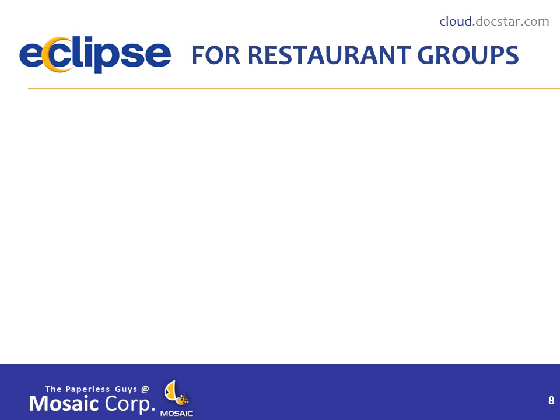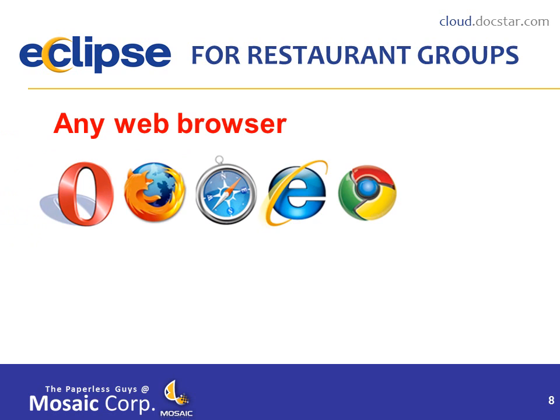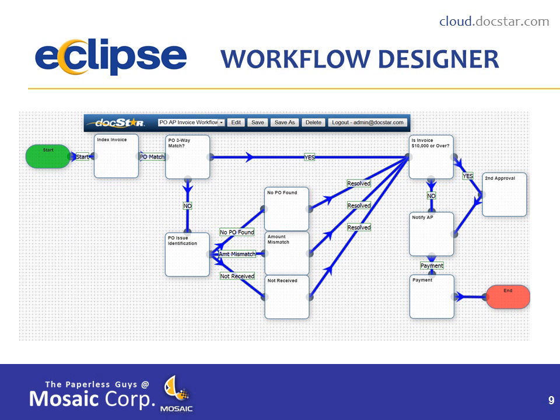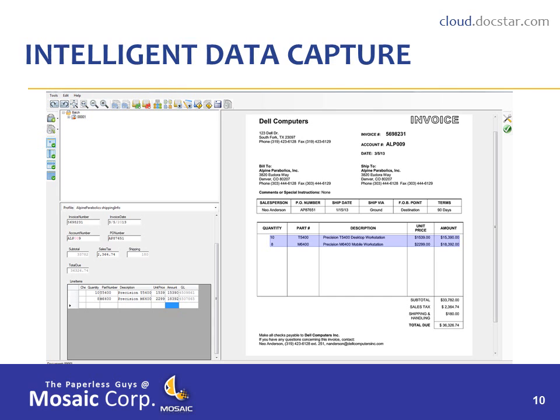The answer to these AP challenges is Eclipse for restaurant groups. It's software that runs on any web browser and on any device. It comes with a workflow designer that's easy to use — just click to add a step — and you can have as simple or complex a workflow as you can imagine.